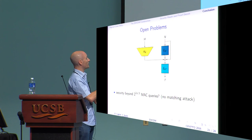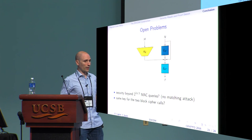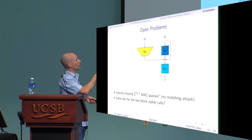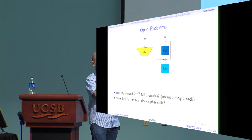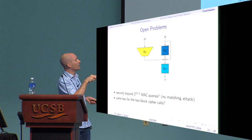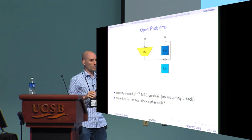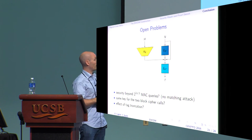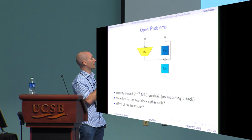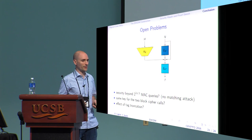Some open problems: security is only proved up to 2^(2N/3) MAC queries but there are no matching attacks, so the true security may be better. Another open question is what happens when the same key is used for both block cipher calls — the PRF security in that setting is also 2^(2N/3), but the message part causes difficulties and it is unclear whether the full MAC is secure with identical keys. Finally, the effect of truncating the tag on security has not been investigated.